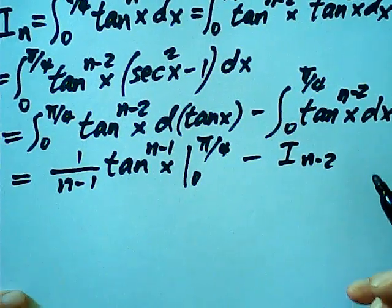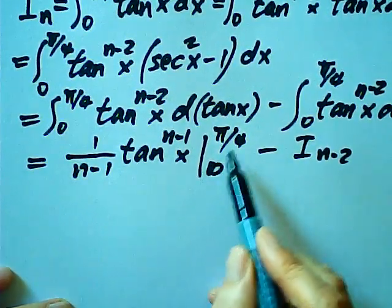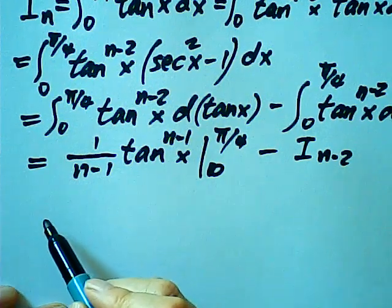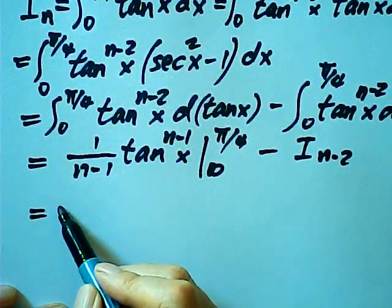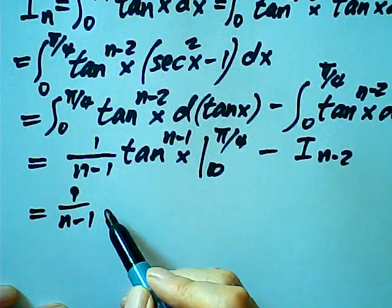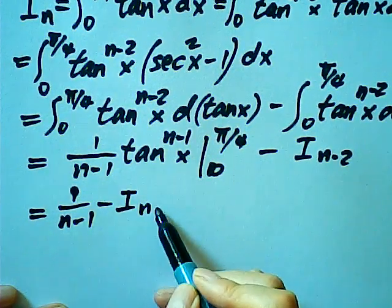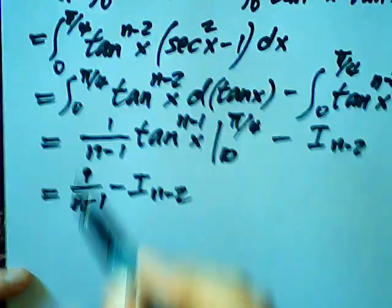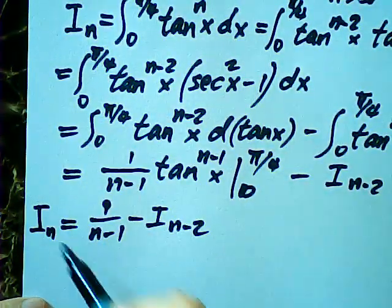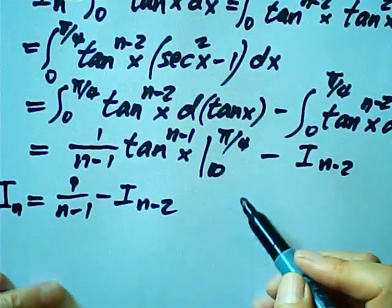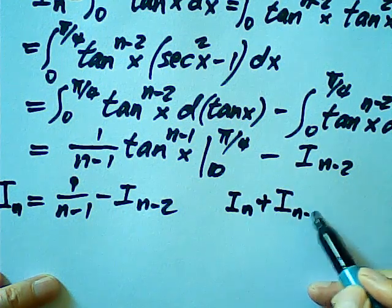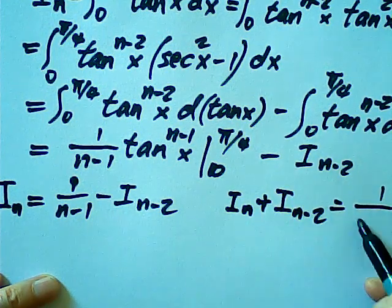This gives us a sort of reduction formula. At x = quarter pi, tangent is 1; at x = 0, tangent is 0. Therefore the first integral evaluates to 1/(n-1). This means I sub n equals 1/(n-1) minus I sub (n-2). Since this side is I sub n, we get the important result: I sub n plus I sub (n-2) equals 1/(n-1).